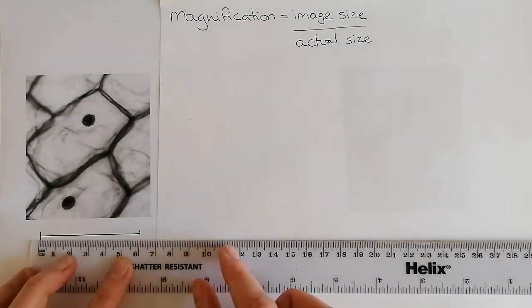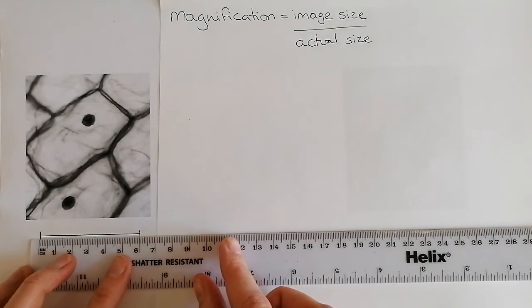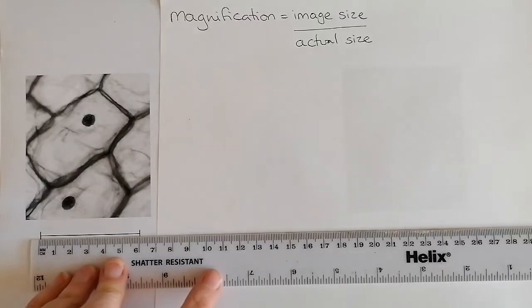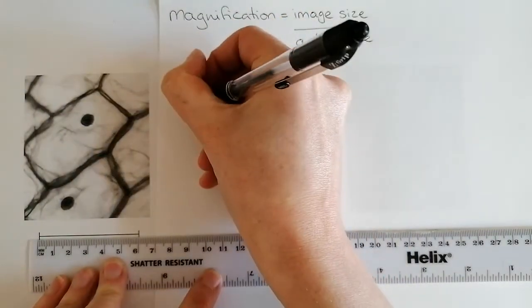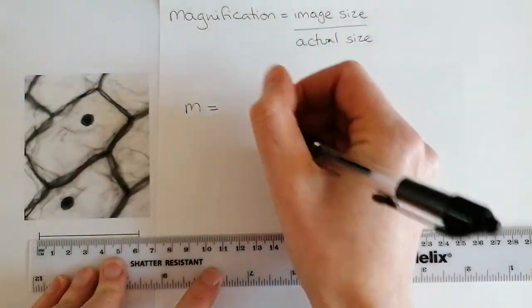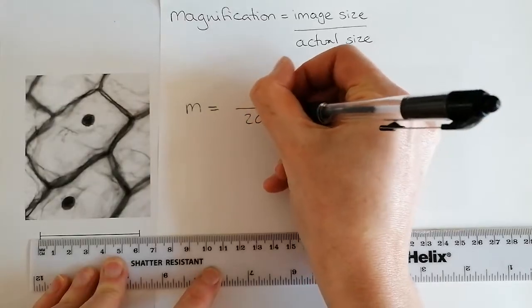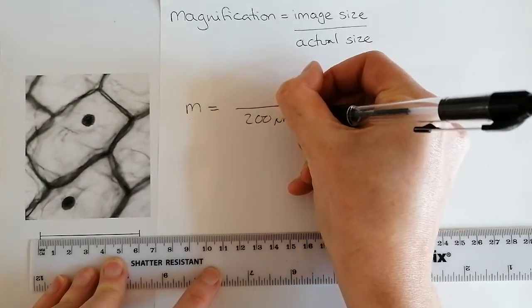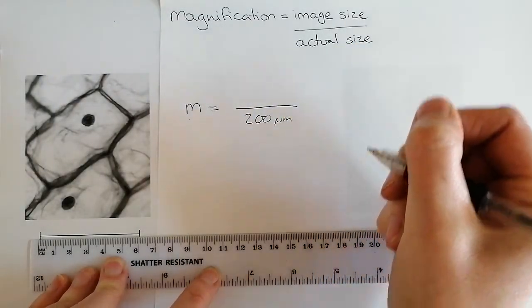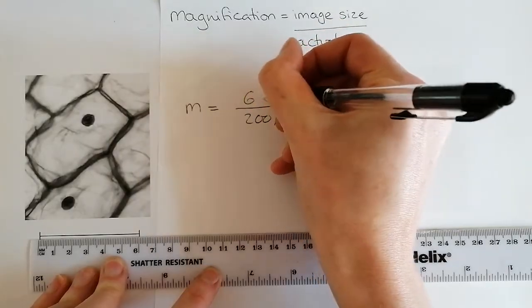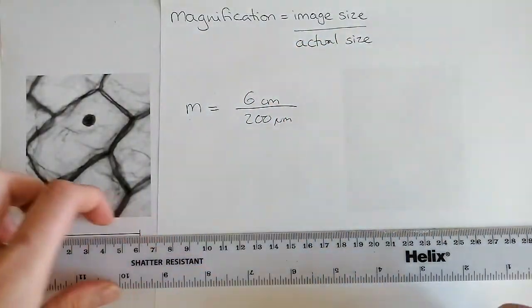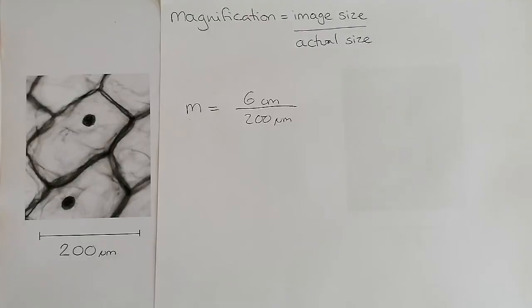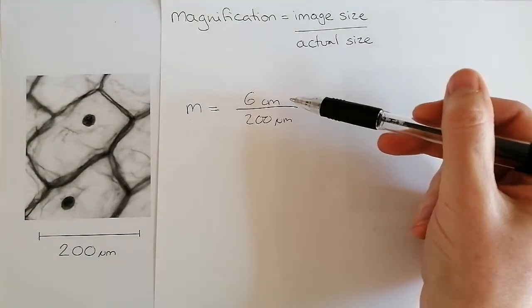So this 200 micrometers is the actual size. So you set your ruler, and as accurately as you can, measure that. So I have got M equals 200 micrometers, and then I've got 6 centimeters as my measured value.